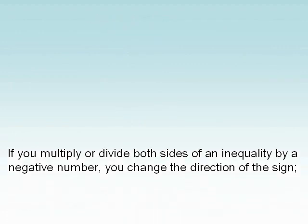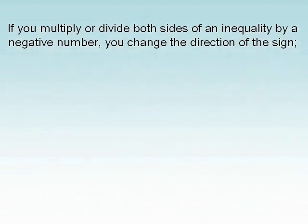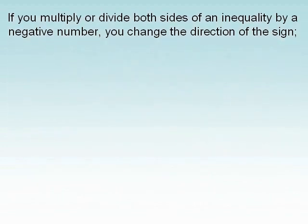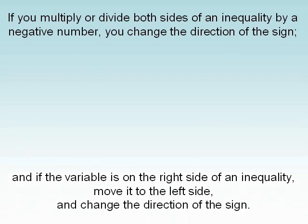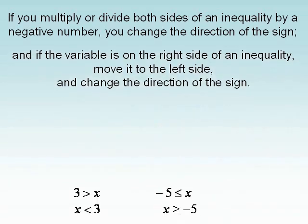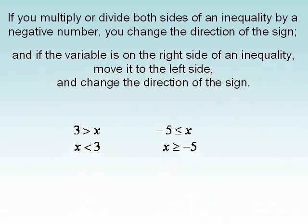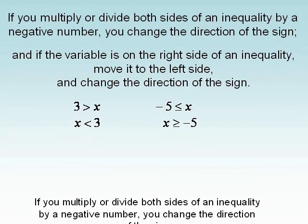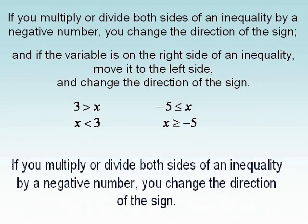And if the variable is on the right side of an inequality, move it to the left side and change the direction of the sign. One more time: if you multiply or divide both sides of an inequality by a negative number, you change the direction of the sign.